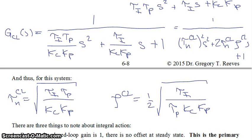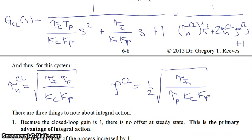Now there are three things to note about integral action. The first one is that the closed loop gain is equal to 1. So here would be our closed loop gain up here. Now remember, for proportional only action, this closed loop gain was always less than 1. But for integral action, when you put it into standard form and therefore you get the closed loop gain in the numerator, that's equal to 1. So because the closed loop gain is equal to 1, there is no offset at steady state. This is the primary advantage of integral action, is that it eliminates offset.